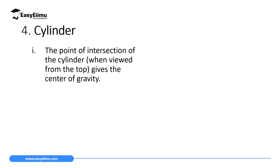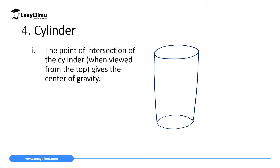The fourth shape is a cylinder, which has two circular sides — a top and a bottom. To find its center of gravity, construct a diameter at the top circle and another diameter at the bottom circle. Then construct a diagonal running from one end to the other end of the cylinder. When viewed from above, where these two diagonals intersect, that will be the center of gravity of that cylinder.